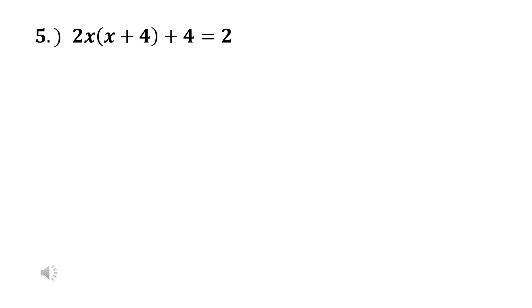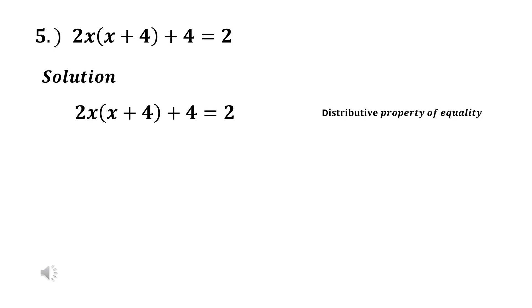Example number five: the equation is 2x(x + 4) + 4 = 2. We remove the parenthesis by applying the distributive property, multiplying 2x inside. 2x times x gives 2x², and 2x times positive 4 gives positive 8x. So we have 2x² + 8x + 4 = 2. The positive 2 on the right is not in its proper location, so we need to transpose it.